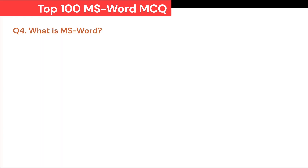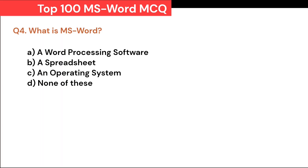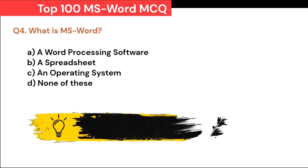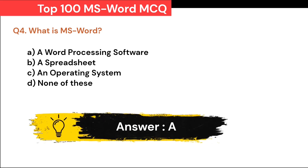What is MS Word? A. A word processing software. B. A spreadsheet. C. An operating system. D. None of these. Correct answer is A. A word processing software.